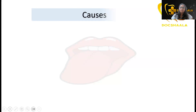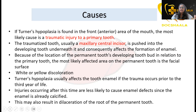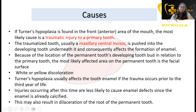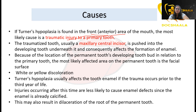If Turner's hypoplasia is found in the anterior region — the incisor region — the most likely cause is traumatic injury to the primary tooth. So for posterior teeth like canines and premolars, the cause is periapical infections or heavy carious lesions, while for anterior teeth the cause is traumatic injury.